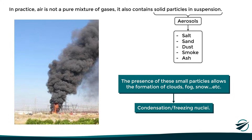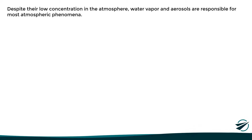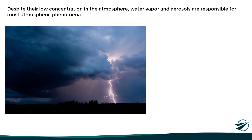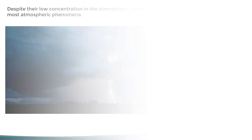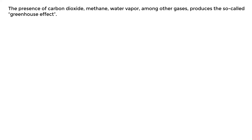Despite their low concentration in the atmosphere, water vapor and aerosols are responsible for most atmospheric phenomena. The study of the vast majority of meteorological phenomena is based on the analysis of the behavior of water in the atmosphere, whether it is in liquid, solid, or gaseous state. However, although they contribute substantially, these are not the only factors that condition the Earth's climate. There are also those known as greenhouse effect gases, including carbon dioxide, methane, and water vapor, which allow us to have adequate and pleasant temperatures for the evolution of life and ecosystems.